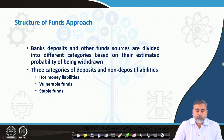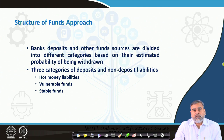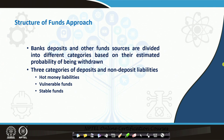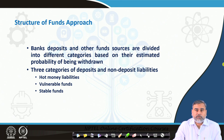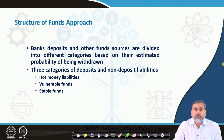Coming back to the structure of the fund approach: whenever banks look at different liquid assets and liabilities — particularly deposits and other funds — these are divided into different categories. Banks basically divide those deposits and other liquid funds into different categories based on the probability of being withdrawn. What is the probability that money will be withdrawn, and when will it be withdrawn in a particular period of time?